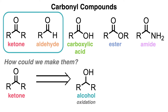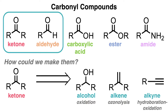How can we make them? We can undergo an oxidation of secondary alcohols using PCC or Jones reagent to form a ketone, or we could undergo ozonolysis to cleave an alkene into two carbonyls, or we could even undergo hydroboration oxidation with a terminal alkyne to form an aldehyde.